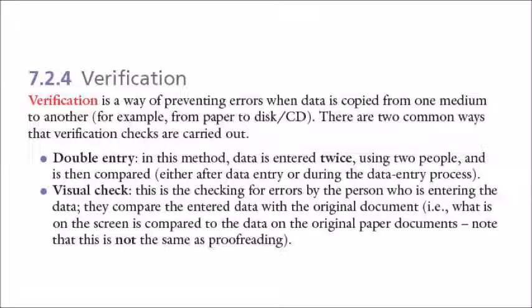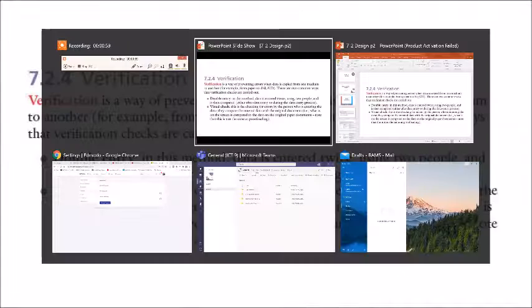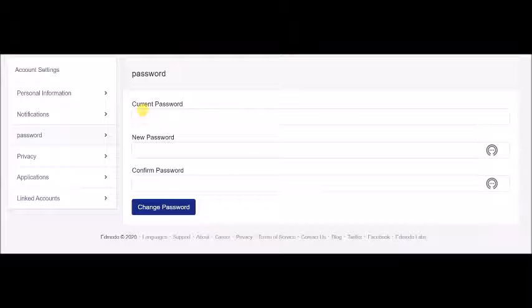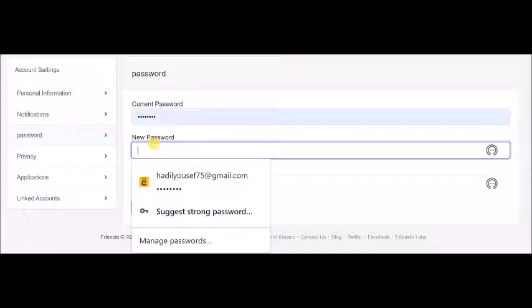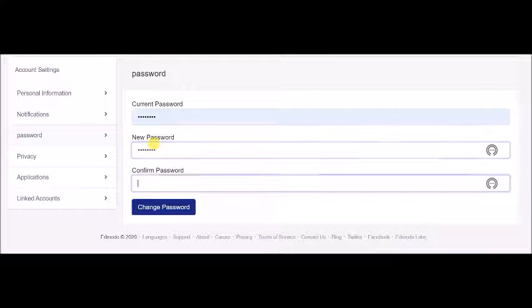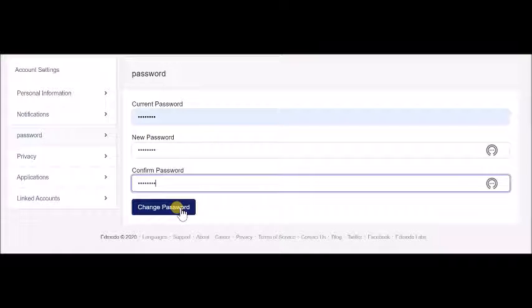The first one is double entry, the second one is the visual check. When I talk about double entry, I talk about the method where data is entered twice, using two people and then it is compared together. Either after data entry or during the data entry process.